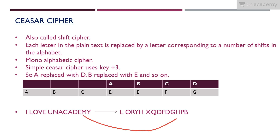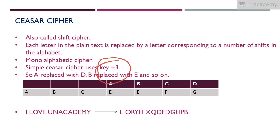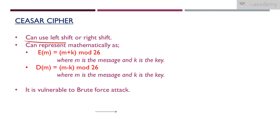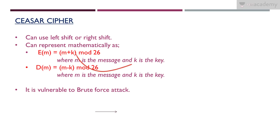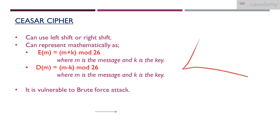The key can be any number of shifts to the right or left. Mathematically, encryption is expressed as E(m) = (m + k) mod 26, where m is the message letter and k is the key. To decrypt, we use m = (cipher - k) mod 26. The value 26 represents the total number of letters in the alphabet.